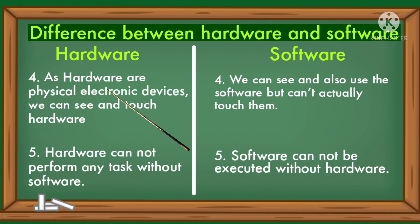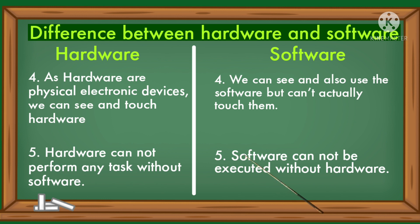As hardware are physical electronic devices, we can see and touch hardware. We can see and also use software but cannot actually touch it. Hardware cannot perform any task without software, and software cannot be executed without hardware.